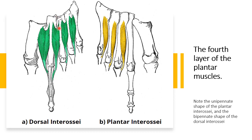The dorsal interossei are bipennate and originate from the sides of metatarsals one to five. The first dorsal interosseous attaches to the medial side of the proximal phalanx of the second digit; the others attach to the lateral side. They abduct digits two to four and flex the metatarsophalangeal joint. Both plantar and dorsal interossei perform flexion at the metatarsophalangeal joint — plantar interossei do adduction and dorsal interossei do abduction. Nerve supply is the lateral plantar nerve.